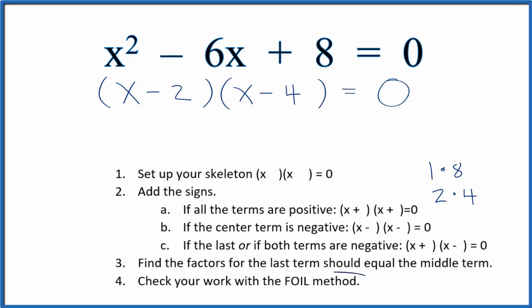But we should check our work with the FOIL method. We'll multiply the first terms. That gives us x squared, x times minus 4. That's the outside, minus 4x. Minus 2 times x, that's minus 2x for the inside. And then the last, minus 2 times minus 4. That gives us a positive 8. These two numbers here in the center, minus 4 and minus 2, that gives us that minus 6x. So it's the same thing as we have up here. So we know this is correct.